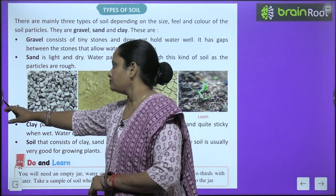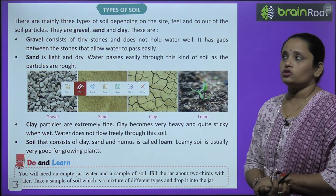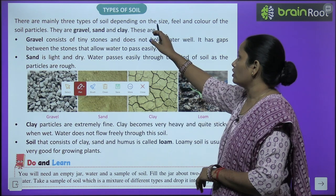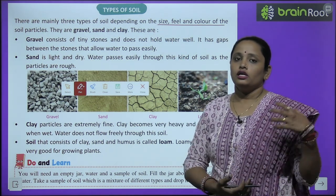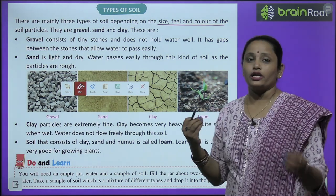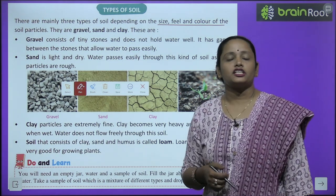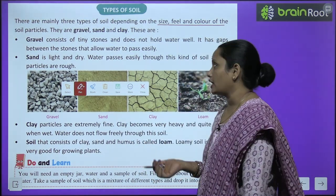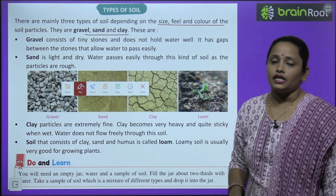Now let's learn what are the types of soil. There are mainly three types of soil, depending on the size, feel and colour of the soil particles. In all these factors we can divide soil into three categories: gravel, sand, and clay.